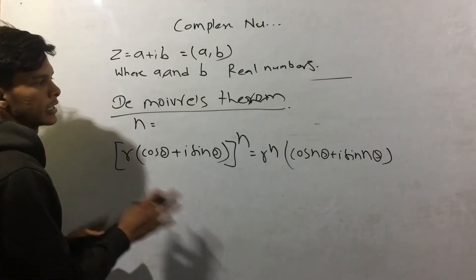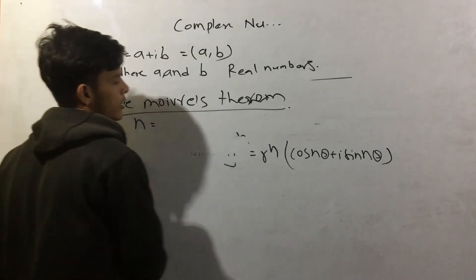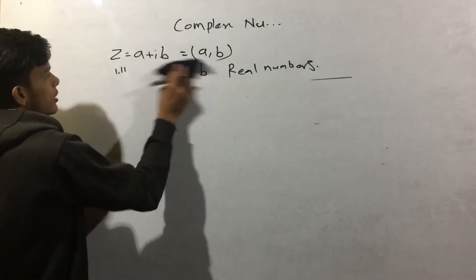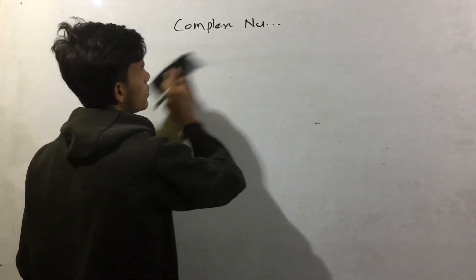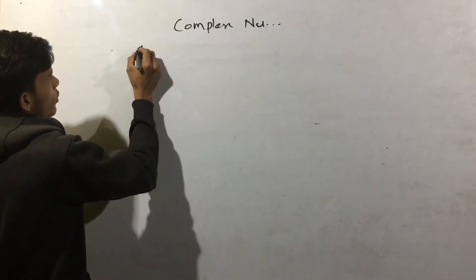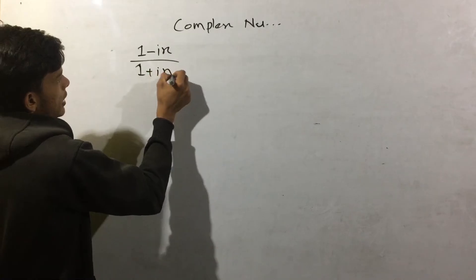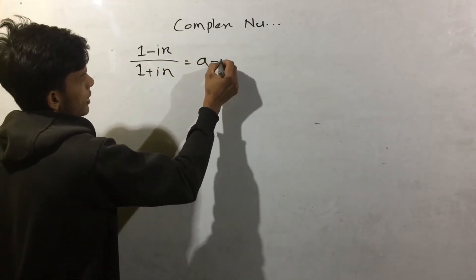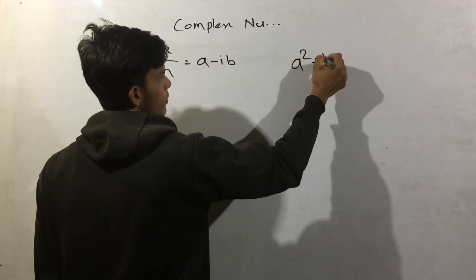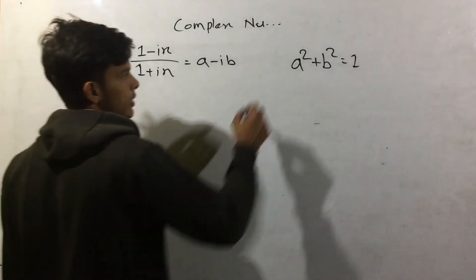I have a question from 2070 and 2026. Question: if 1 minus ix over 1 plus ix equals a minus ib, prove that a squared plus b squared is equal to 1.